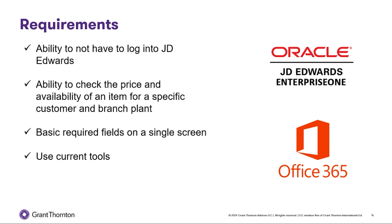For today's demonstration, I used the following requirements to define the automation. We want to have the ability to not have to log in to JD Edwards — basically, a salesperson can use a mobile app on their phone while in the field, or on a tablet, whatever they need, just mobile. The ability to check the price and availability of an item for a specific customer at a specific branch plant — these are the common inputs for the check price and availability function in JD Edwards. We only want the fields needed on a single screen, so basically no other navigation within this app. And we only want to use our current toolset.